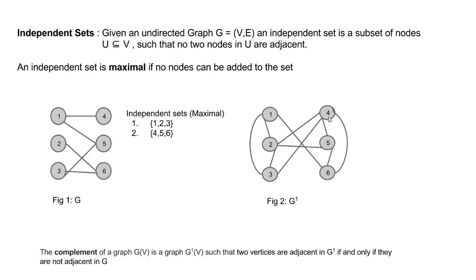The reverse is also true: if figure 2 was the original graph, then figure 1 would be the complement, and {1,2,3} in the original would be maximal cliques, while in its complement they become maximal independent sets. This means that if we have an efficient algorithm to find maximal independent sets, we can find maximal cliques — just transform the graph to its complement, find maximal independent sets there, and those same subsets will be maximal cliques in the original graph. The reverse is also true.